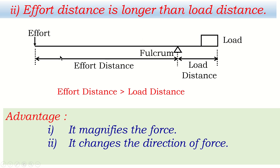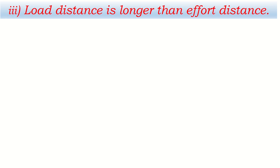When effort distance is longer than load distance, the velocity ratio — which is the ratio of effort distance to load distance — is greater than one. This is the conclusion about the velocity ratio in the second condition of the first class lever.